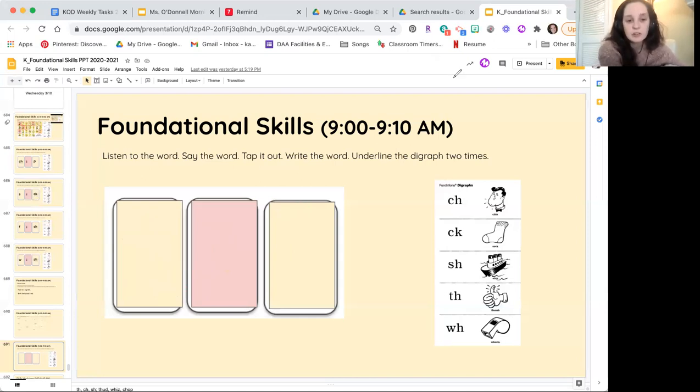The next word is whiz. If somebody is a whiz, they're really smart, or they're really good at something. Say the word whiz. Now let's tap it out. Whiz, whiz. Alright, write down the sounds that you hear in whiz. Whiz. This one can be a little tricky.